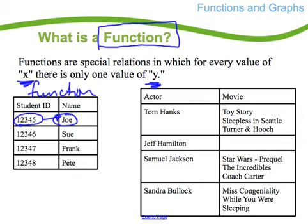So in a function, one x value only has one y value. In this case with Tom Hanks, it's not a function because Tom Hanks has been in tons of different movies. For every one x value, we have multiple y values.